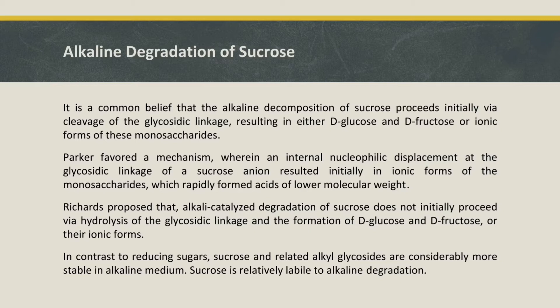Regarding alkaline degradation of sucrose, it is a common belief that alkaline decomposition of sucrose proceeds initially via cleavage of the glycosidic linkage, resulting in either D-glucose and D-fructose or ionic forms of these monosaccharides. Parker favored a mechanism wherein an internal nucleophilic displacement at the glycosidic linkage of a sucrose anion resulted initially in ionic forms of the monosaccharides, which rapidly formed acids of lower molecular weight.